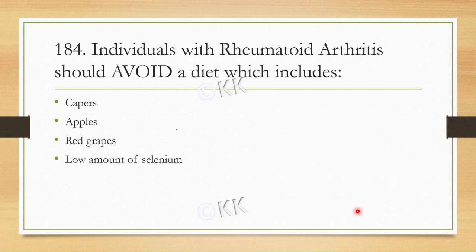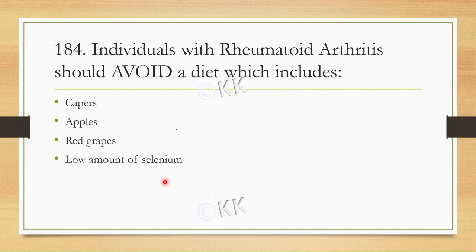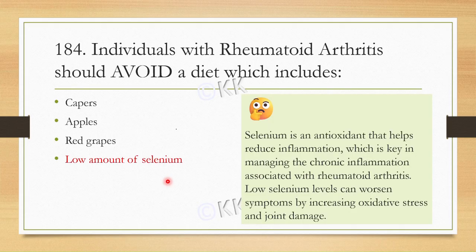Let's move to our next question. Individuals with rheumatoid arthritis should avoid a diet which includes: Option A: Capers. Option B: Apple. Option C: Red Grapes. Option D: Low amount of Selenium. The correct option is low amount of Selenium.